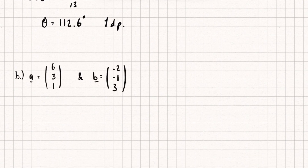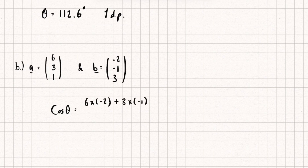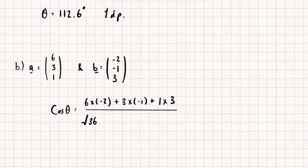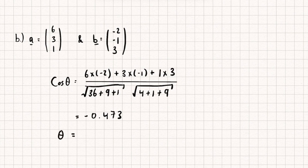Now let's look at the second example in three dimensions. The angle between vectors a and b is: cosine theta equals a dot b, which is 6×(-2) plus 3×(-1) plus 1×3, all divided by the magnitude of a — the square root of 6² plus 3² plus 1² — multiplied by the magnitude of b — the square root of (-2)² plus (-1)² plus 3². Putting this into my calculator gives approximately -0.473, and taking the inverse cosine gives an angle of 118.2 degrees to one decimal place.